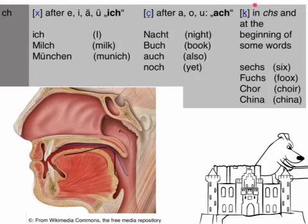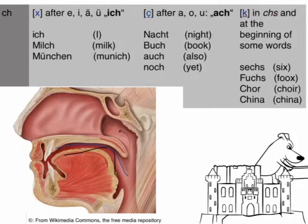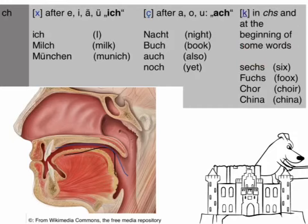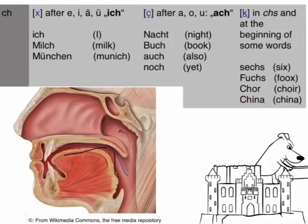The last CH pronunciation is easy — it's pronounced K. This happens when you have C-H-S, or at the beginning of some words. Depending on the dialect, some people might pronounce it differently. Examples: Sechs, Fuchs, Kor, Kina. For Kina, some might say Sheena, so don't worry if you hear something else. The important ones are Sechs and Fuchs.